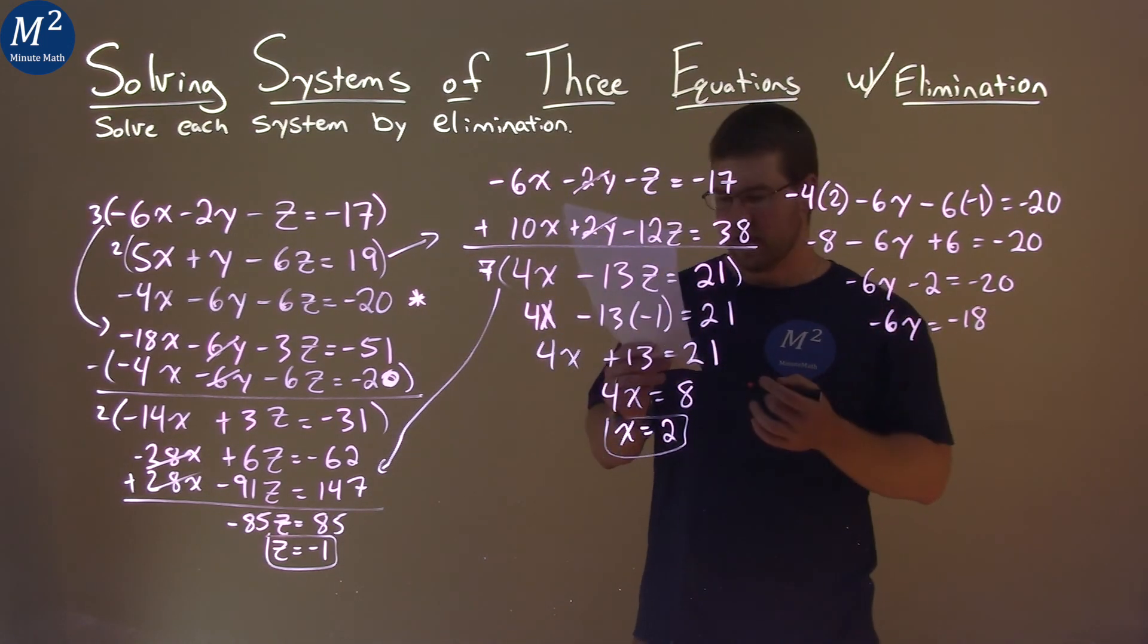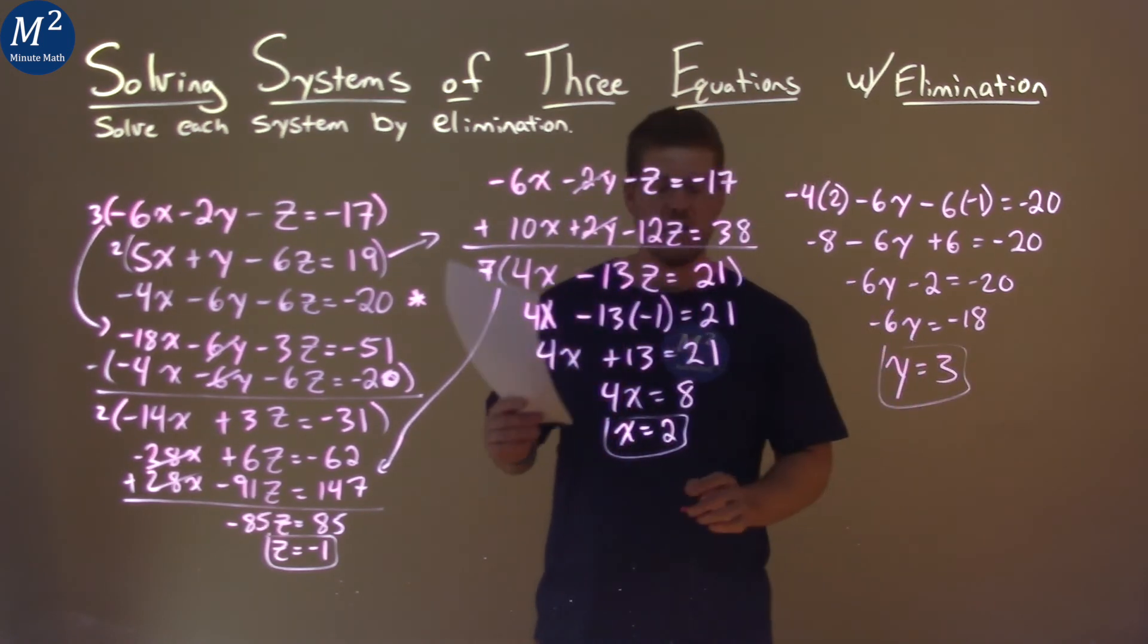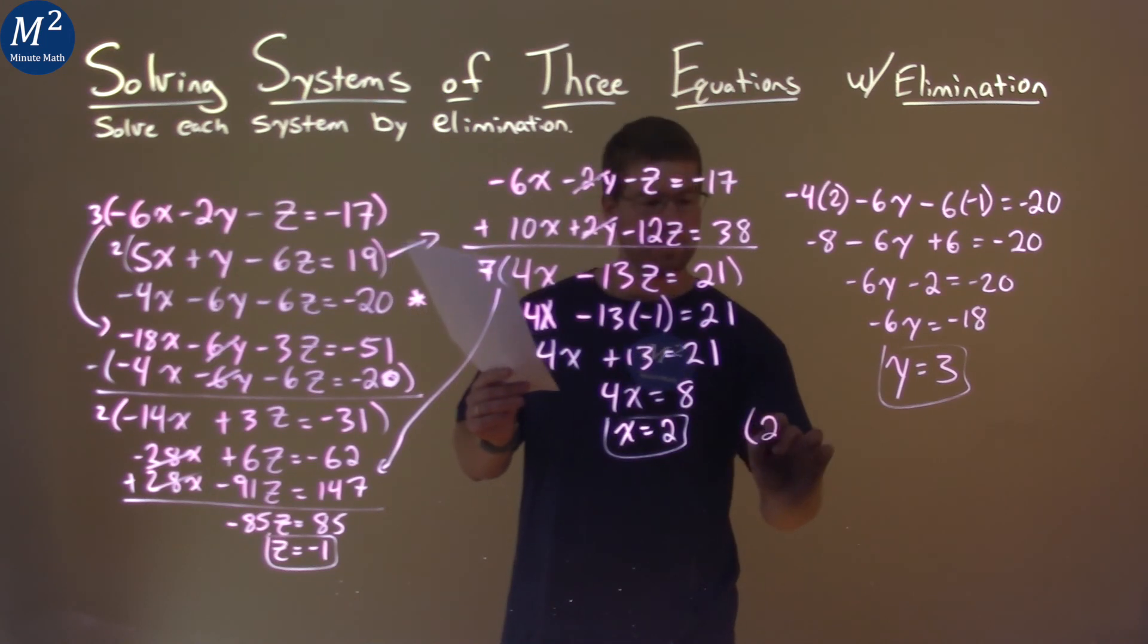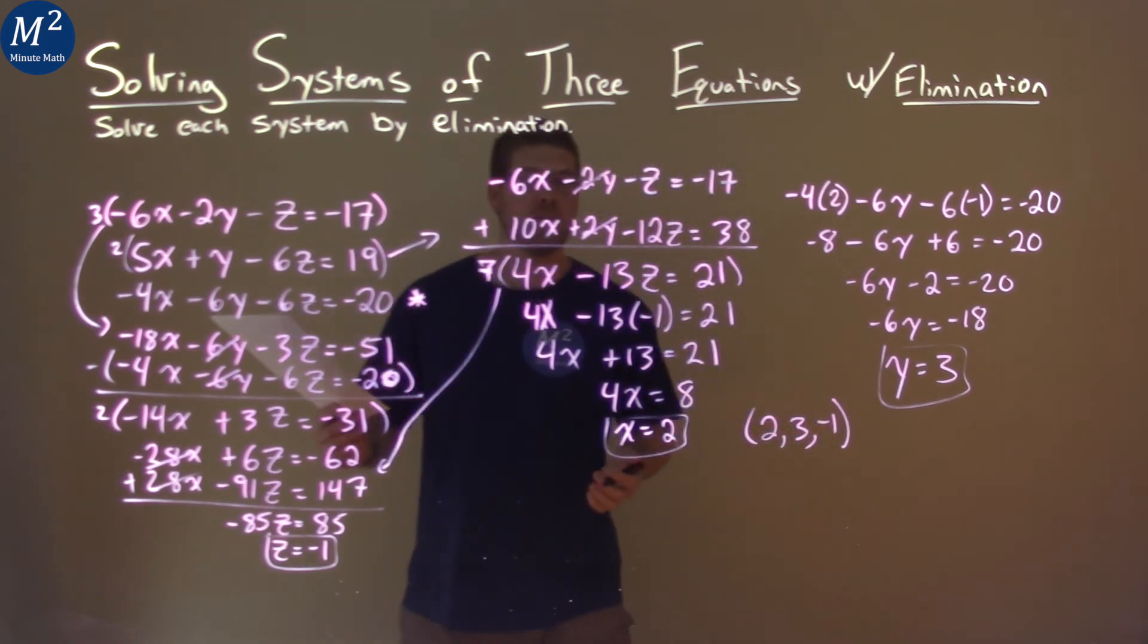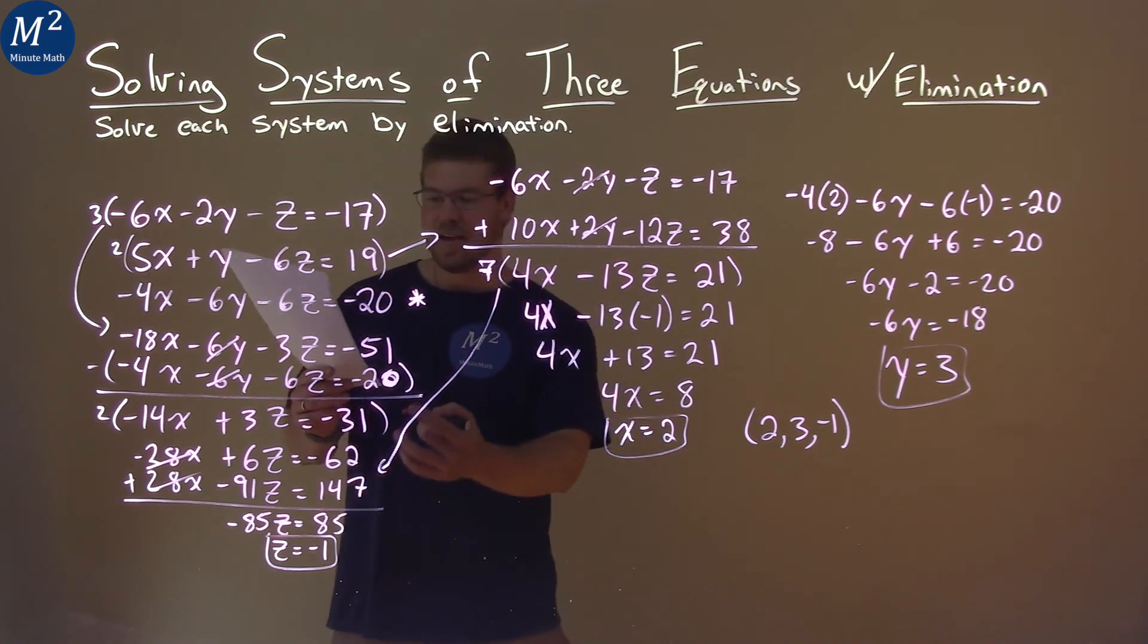Add 2 to both sides. Negative 6y equals negative 18. Divide both sides by negative 6, and y is by itself, and it's equal to positive 3. We can write this as a coordinate point: x first is 2, y is 3, and z is negative 1. And so that's it. Our final answer here is x equals 2, y equals 3, and z equals negative 1.